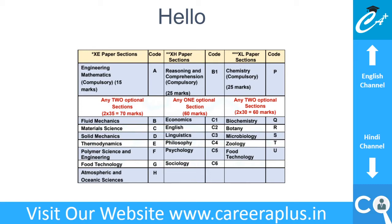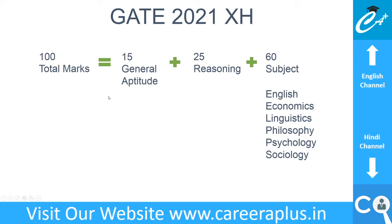The GATE paper will be of total 100 marks, in which 15 marks will be from general aptitude and 25 marks will be from reasoning and comprehension. So the total for these two topics is 40 marks. Usually the GATE qualifying marks are around 35 to 40, so if you focus on these two topics it will help you qualify GATE.